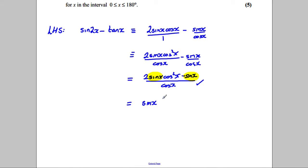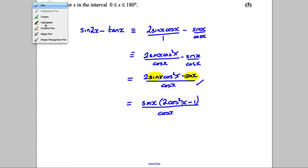Factorizing that out, I have sine x times 2 cos squared x subtract 1 over cos x. Now, you should spot this straight away. That there is one of your double angle identities. That is equal to cosine of 2x.